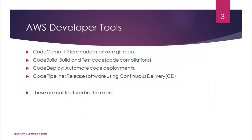Coming to developer tools, we have four different offerings from AWS. The first one is CodeCommit, then we have CodeBuild, CodeDeploy, and CodePipeline. CodeCommit, CodeDeploy, and CodePipeline were already there with AWS, and CodeBuild is a relatively new service announced at the 2016 re:Invent conference.